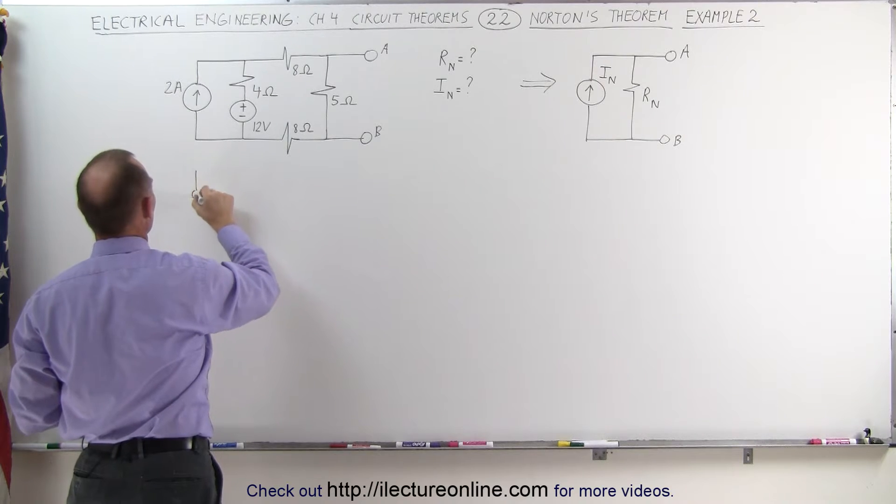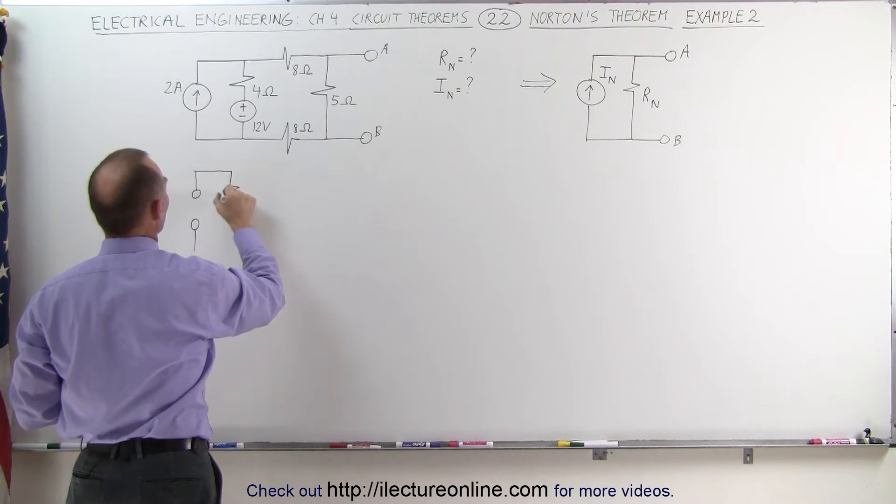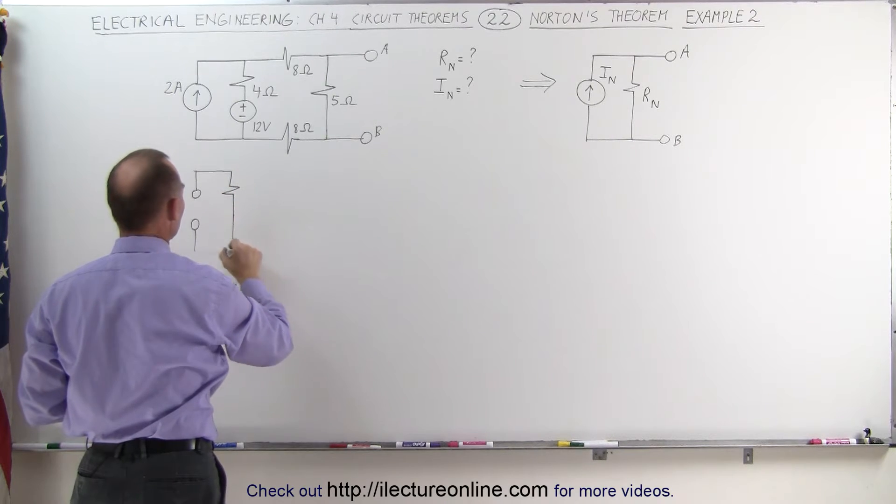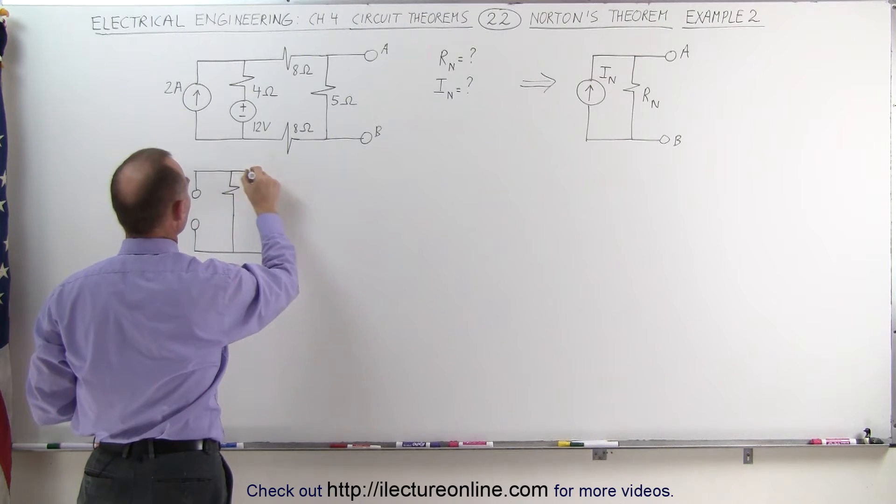We have an open right here because we removed the current source. We have a 4 ohm resistor and here we set the voltage to zero so that would simply be a circuit line like this.